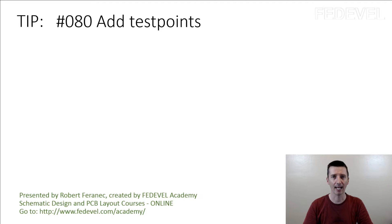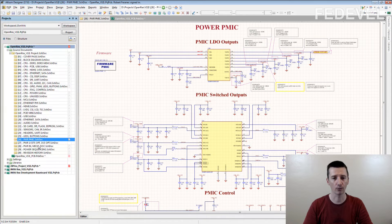Tip number 80: add test points. As an example, I'm going to use the OpenRex schematic, especially the Power page here.